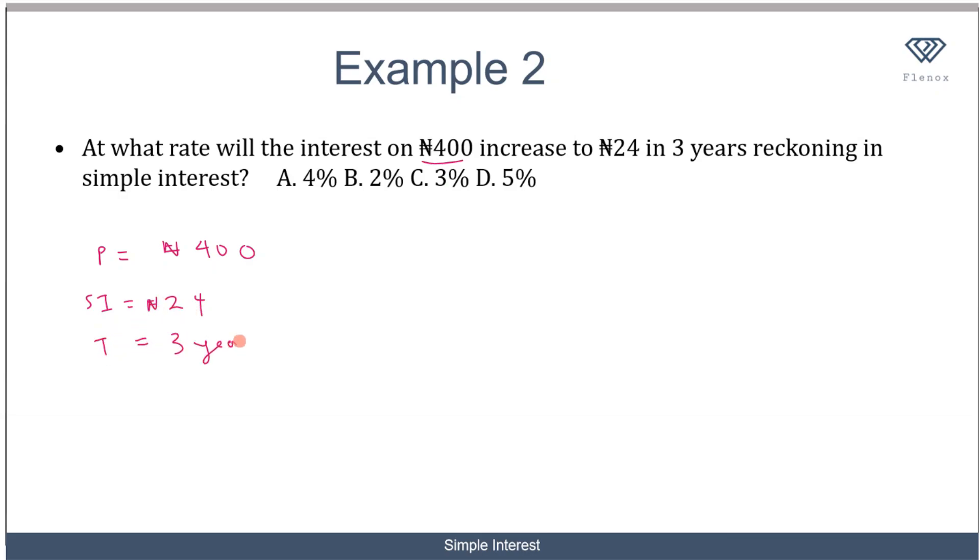At what interest rate is this possible? This is pretty straightforward. We know that our simple interest equals our principal times rate times time over 100, but in this case the rate is unknown. That's what we are trying to find. So I rearrange the formula. We know our simple interest is 24, which equals our principal, which is 400, times the rate, then times time, which is 3 years, over 100.